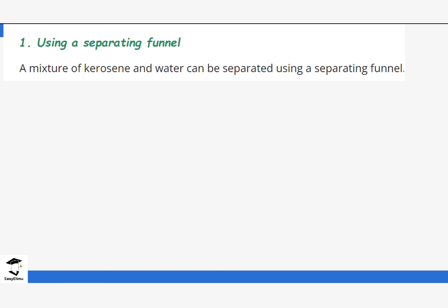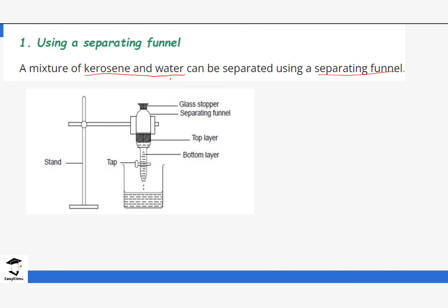We will start with use of a separating funnel, using the example of a mixture of kerosene and water. Let's look at how a separating funnel looks like — this was mentioned when we were looking at apparatus in topic one. The mixture of kerosene and water is poured into the separating funnel, then the solution is left to stand for a few minutes, and after those few minutes, two layers form — a top layer and a bottom layer.